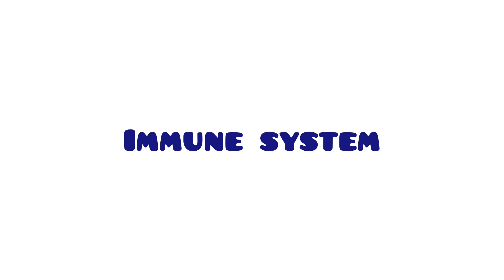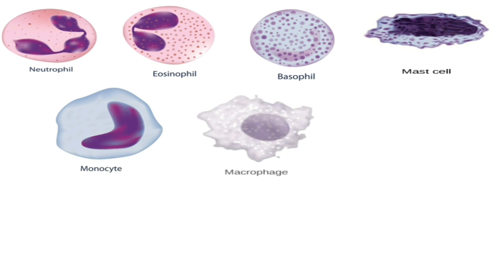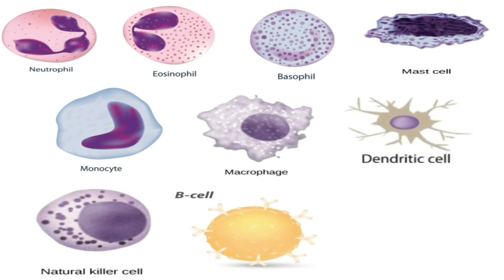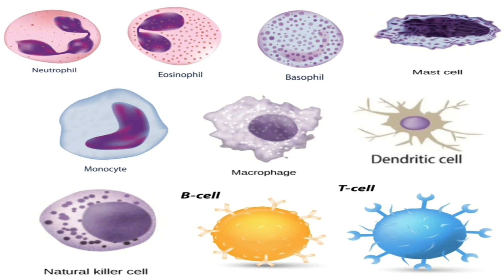Now that we know our body's army is called the immune system, let's meet the soldiers that will mount the attack. The soldiers are: neutrophil, eosinophil, basophil, mast cells, monocyte, macrophage, dendritic cells, natural killer cells, B cells, and T cells. After learning their names, let's see how they are formed, then discuss the function of each cell individually.